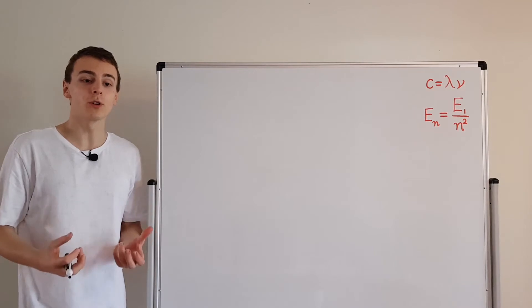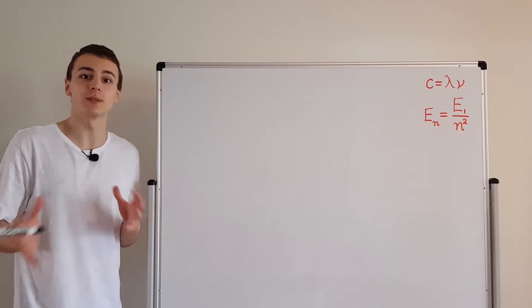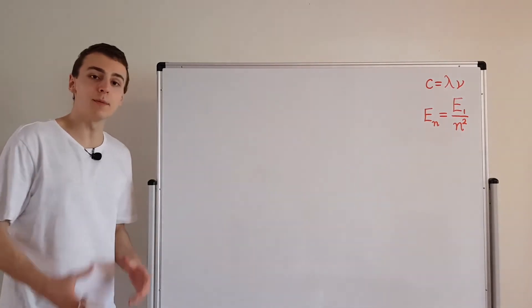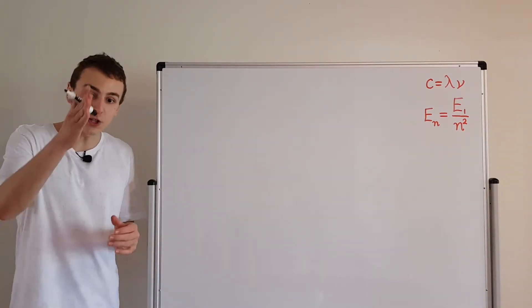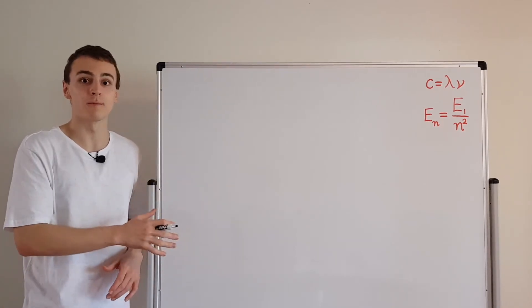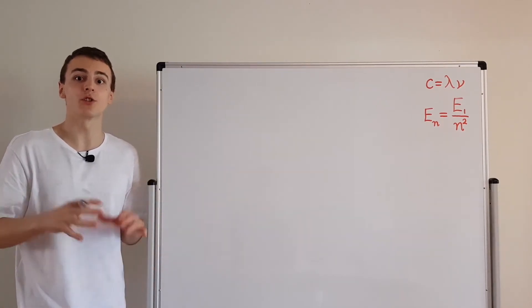So Bohr's model, its job is to explain emission and absorption spectrums. That's what it's intended to do. So if we take the emission spectrum of hydrogen, we can actually find those specific values with the Rydberg formula. So let's have a look at how we can actually derive this.